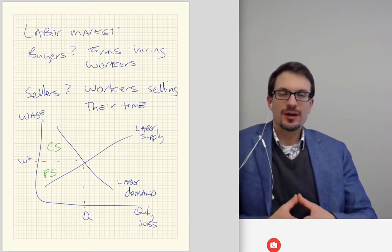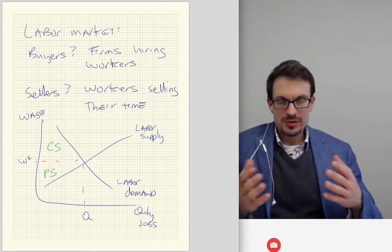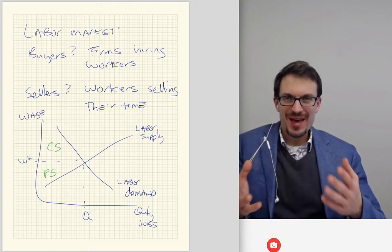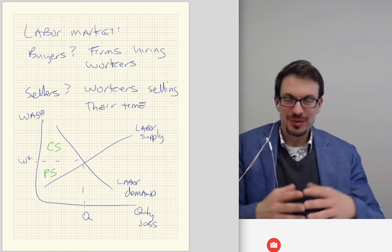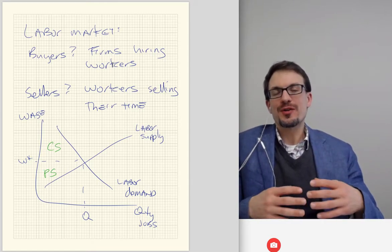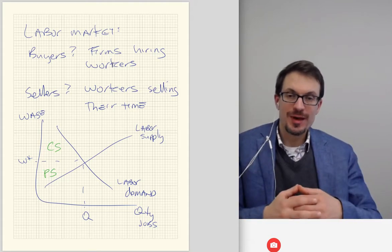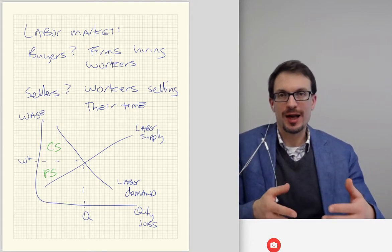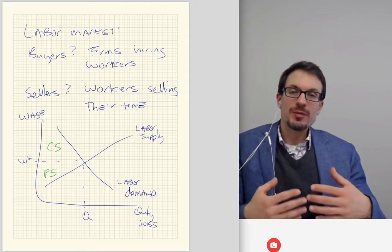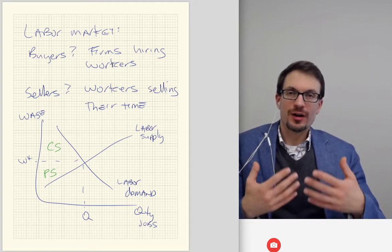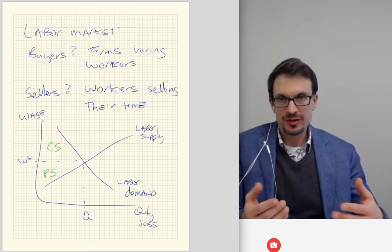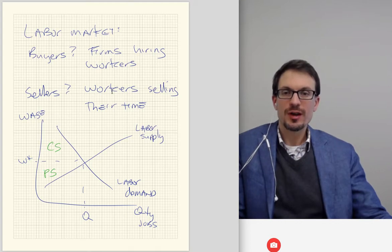In the labor market, our buyers are firms and our sellers are workers. Usually in most markets, our demanders are people and our suppliers are firms. But it's better to think of demand as pertaining to buyers and supply as pertaining to sellers. So in the labor market, our demanders are buyers of labor — firms hiring workers — and our suppliers are sellers of labor — workers selling their time.